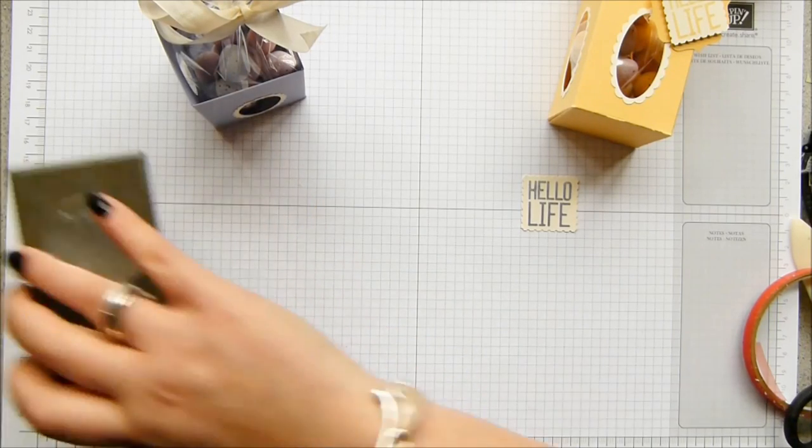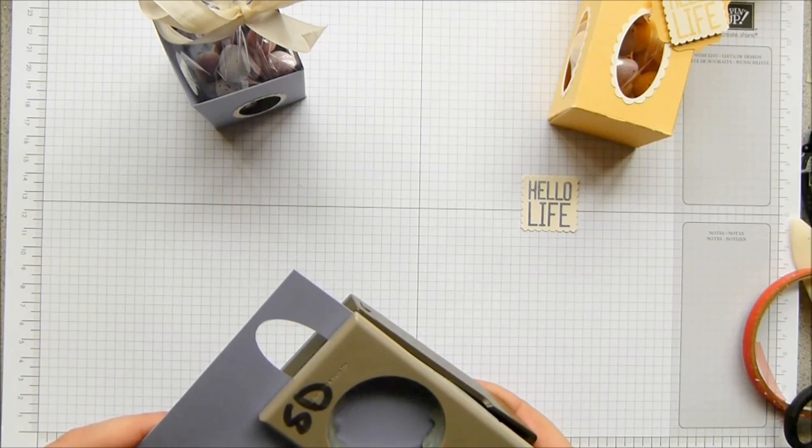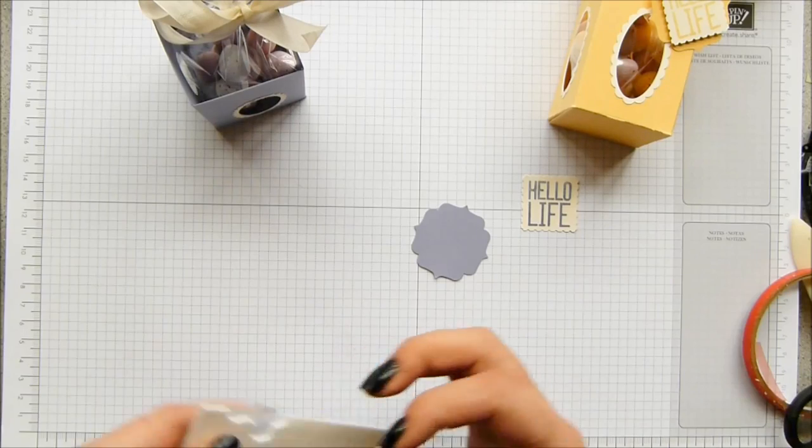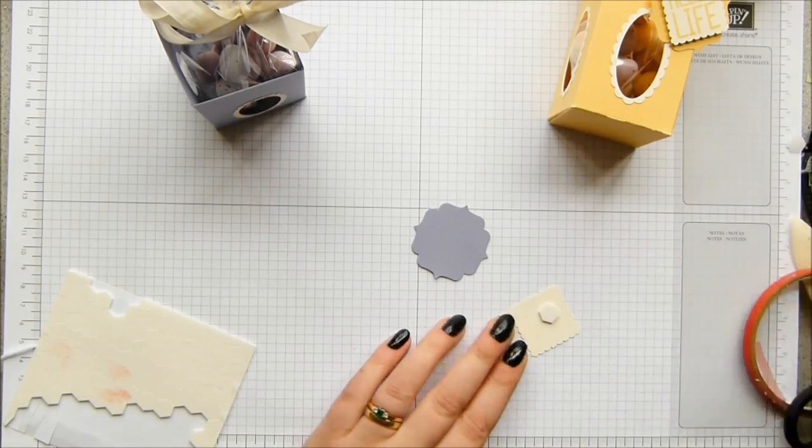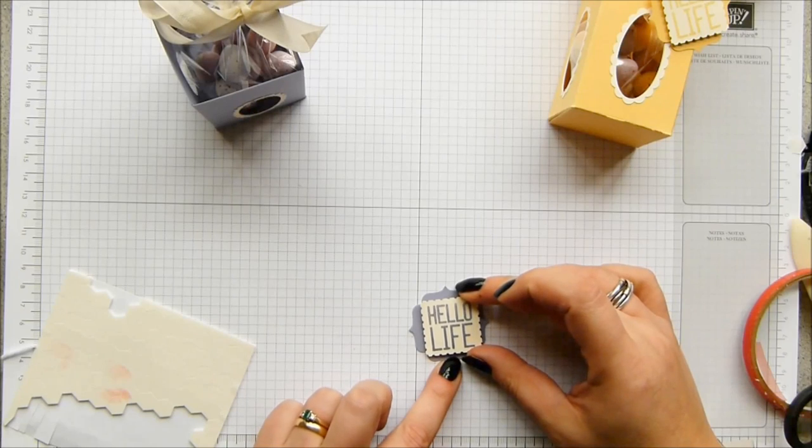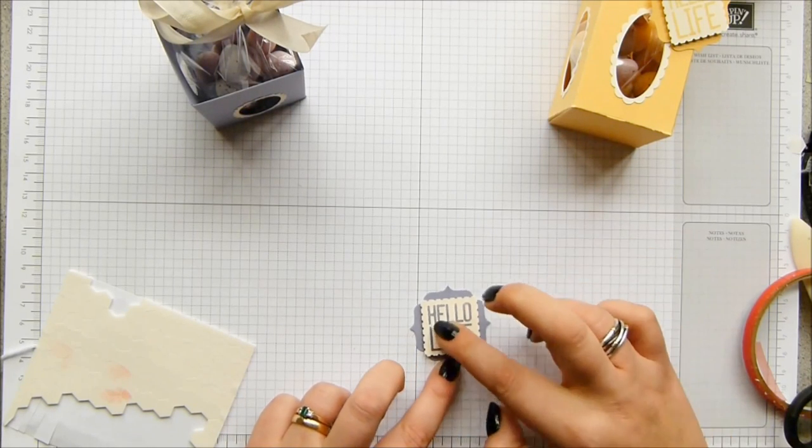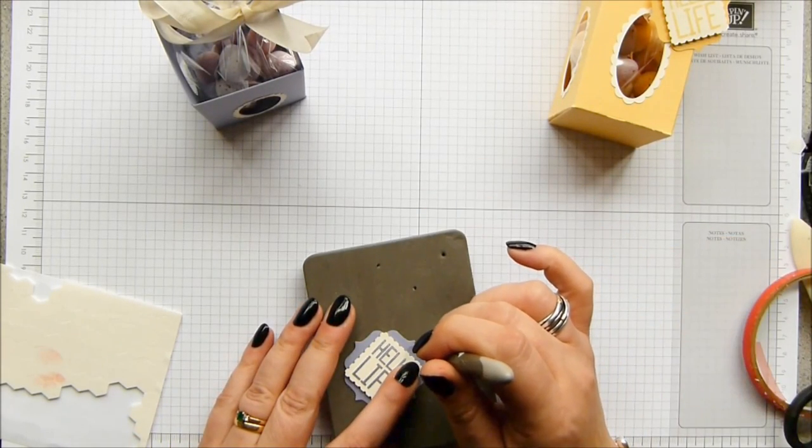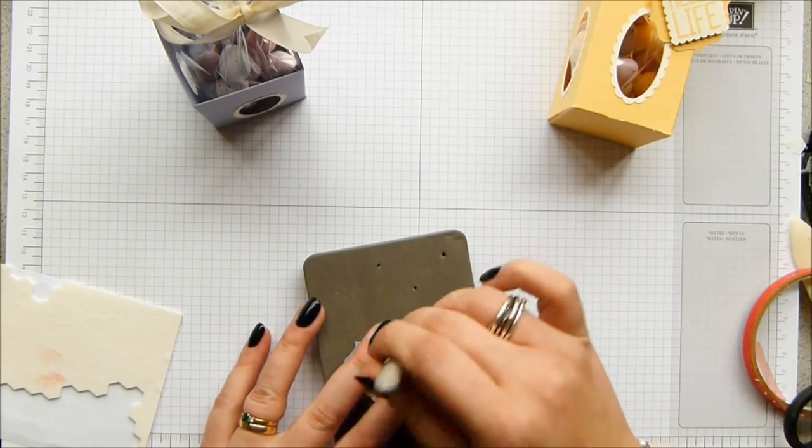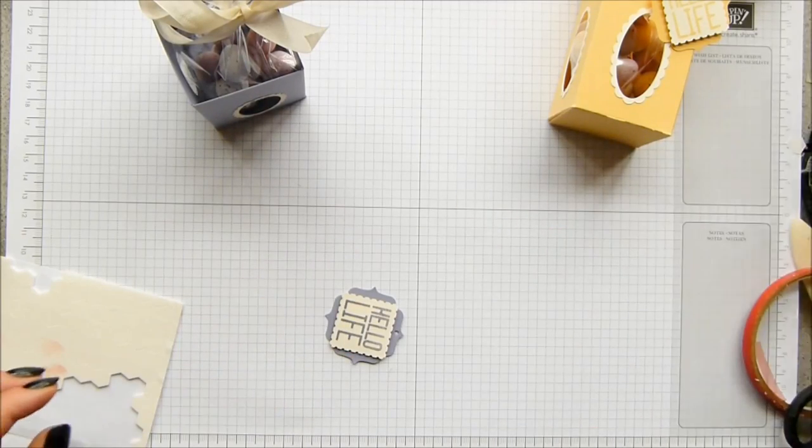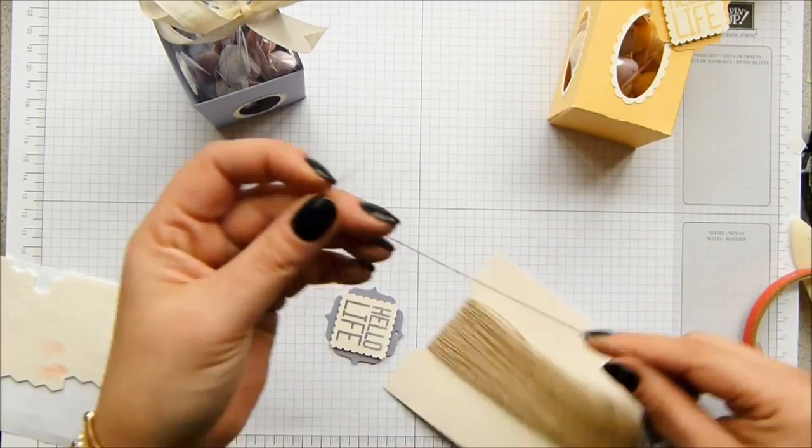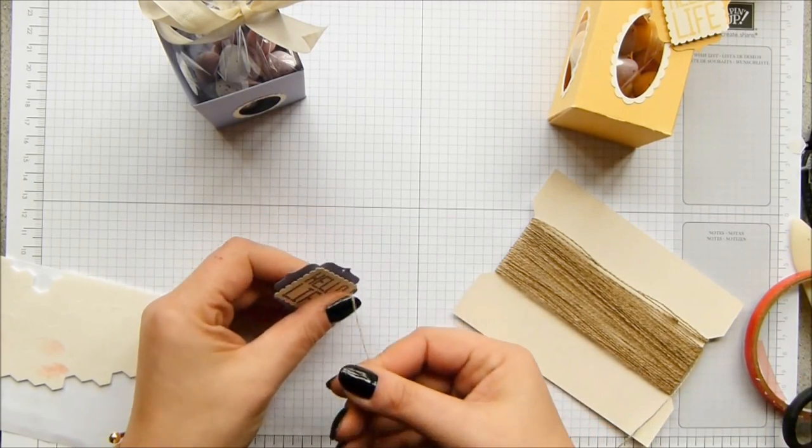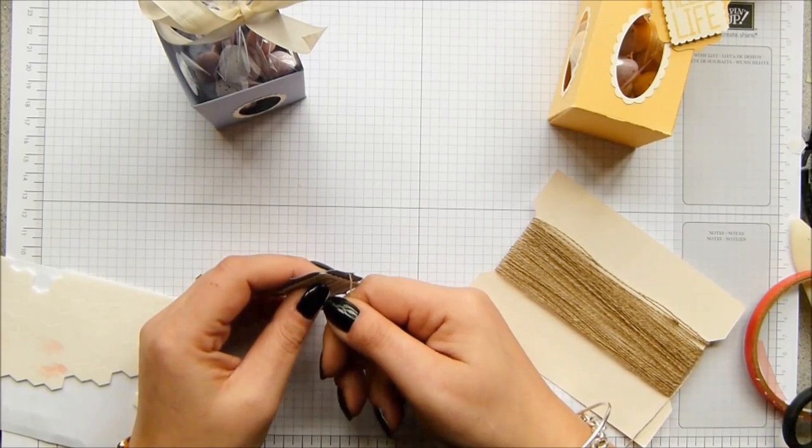And then I've got the label bracket punch and a piece of Wisteria Wonder. And then I've got my dimensionals. So one on the back of there into the middle. And then just punch a little hole in for some linen thread, which I've got handy somewhere. And then that will tie on to your bag, which obviously I've tied my bag of eggs in advance.